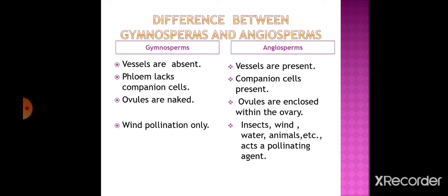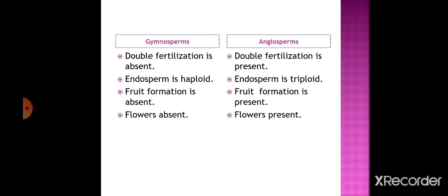Double fertilization is present in angiosperms whereas it is absent in gymnosperms. The endosperm is haploid in gymnosperms whereas in angiosperms it is triploid. Fruit formation is absent in gymnosperms but takes place in angiosperms. Flowers are absent in gymnosperms whereas flowers are present in angiosperms.